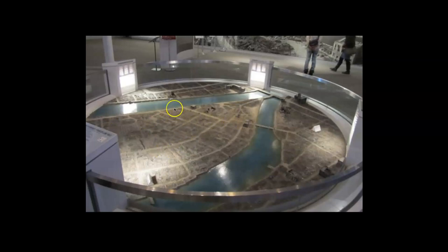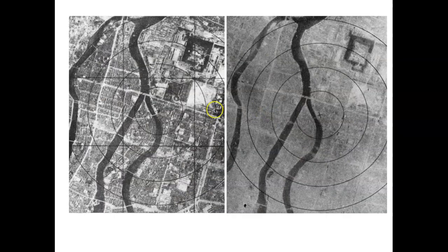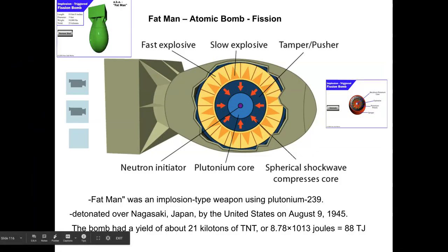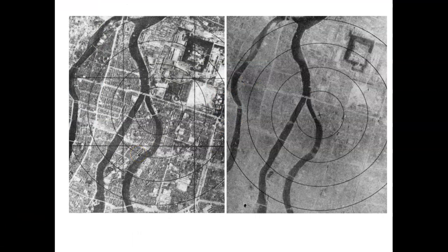Reconnaissance photos show before and after the bomb. Much of the flattened area was due to the heat and fires that burned the city down. Even though the bomb itself killed about 60,000 to 80,000 people instantaneously, hundreds of thousands more died because of the fires, and even more died from radiation sickness. Remember: only 0.7 kilograms actually underwent fission, so enormous amounts of radioactive material were spread throughout the city.